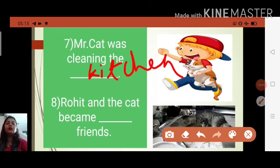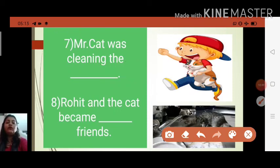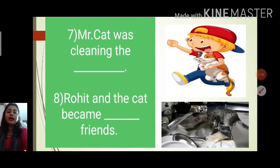Next number, Rohit and the cat became blank friends. Yes, and his heart was full of love. So there you will write what? Good. G-O-O-D. Good. Rohit and the cat became good friends. Children, hope you all have understood very nicely.